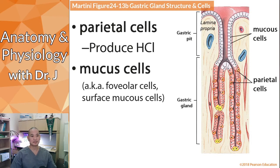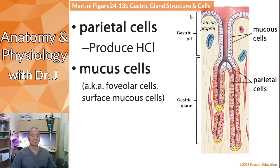Next we have mucus cells, also known as foveolar cells or surface mucus cells — they go by many names. Their key function is to produce mucus, and notice that they are located mostly toward the side facing the inside of the stomach, which is very important for a specific reason.